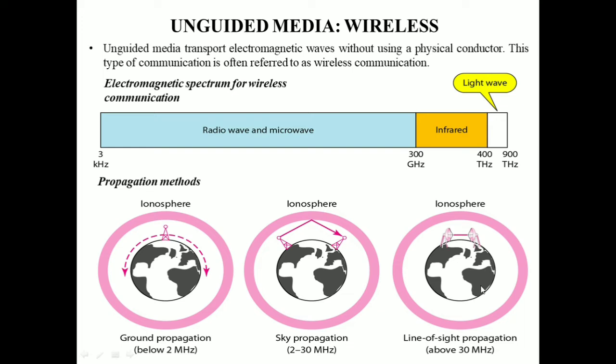In line of sight propagation, very high frequency signals are transmitted in straight lines directly from antenna to antenna. Antennas must be directional, facing each other, and tall enough or close enough together not to be affected by the curvature of the earth.